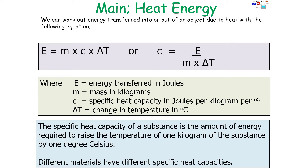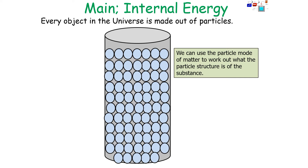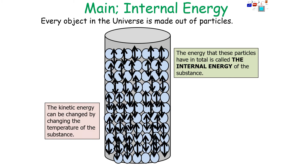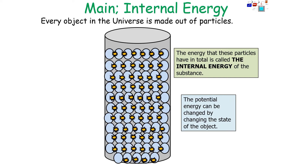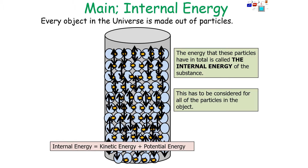Every object in the universe is made out of particles, and we can use the particle model of matter to work out the particle structure of the substance. The energy that these particles have in total is the internal energy of the substance. Part of the internal energy is the kinetic energy of the particles — how much the particles move or vibrate — which can be changed by changing the temperature. The other part is the potential energy of the particles — how much the particles are attracted to each other — which can be changed by changing the state of the object. So the internal energy equals kinetic energy plus potential energy, considered for all of the particles in the object.